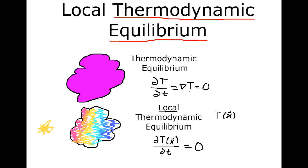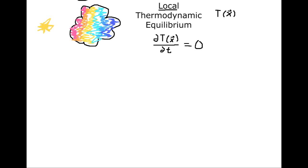So why do we bother with local thermodynamic equilibrium? Well, it turns out in real life, systems are very rarely in global thermodynamic equilibrium. Energy is always being transported from one place to another. If energy weren't being transported, these systems — especially in astronomy — would not be that interesting to study. It's only in local thermodynamic equilibrium that we get to see these energetic processes in progress.